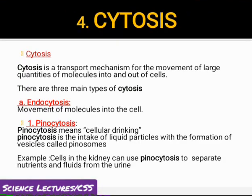Fourth is the cytosis process. Cytosis is the transport of molecules in larger quantity into and out of the cell. Cytosis process کو further 3 categories میں split کیا گیا ہے: endocytosis، exocytosis، اور transcytosis — جس میں phagocytosis اور pinocytosis شامل ہیں۔ Pinocytosis is the cell drinking process جس میں liquid کا intake vesicles میں کیا جاتا ہے — vesicles کو pinosomes کہتے ہیں۔